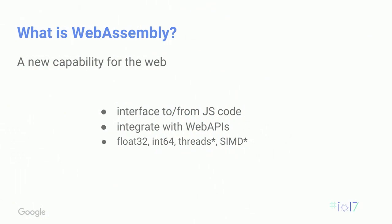WebAssembly was developed by the same people who built Native Client and asm.js, along with people from Microsoft and Apple, all working together. It's tightly integrated into the web platform — a new capability, not meant to replace JavaScript. You can talk to all the web APIs, calling all standard DOM functions from your WebAssembly code via JavaScript. It has features like 32-bit floats and 64-bit integers, and future plans include threading and SIMD primitives.